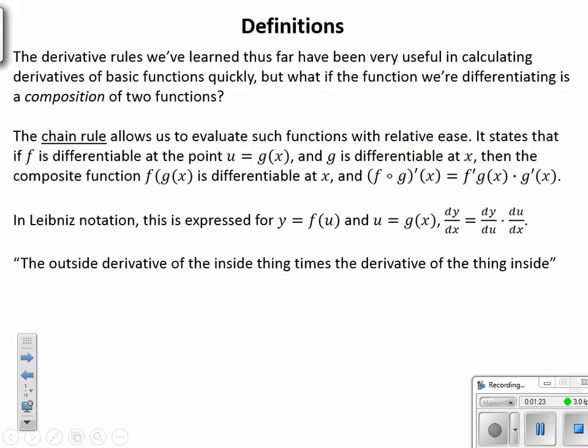So what is the chain rule really used for? Right now our derivatives work for basic functions, but what if the function we're trying to differentiate is actually a composition? There are many levels to that function — there's an inside thing and an outside thing, or there may be multiple nested inside things. The chain rule allows us to take such functions and break them down.